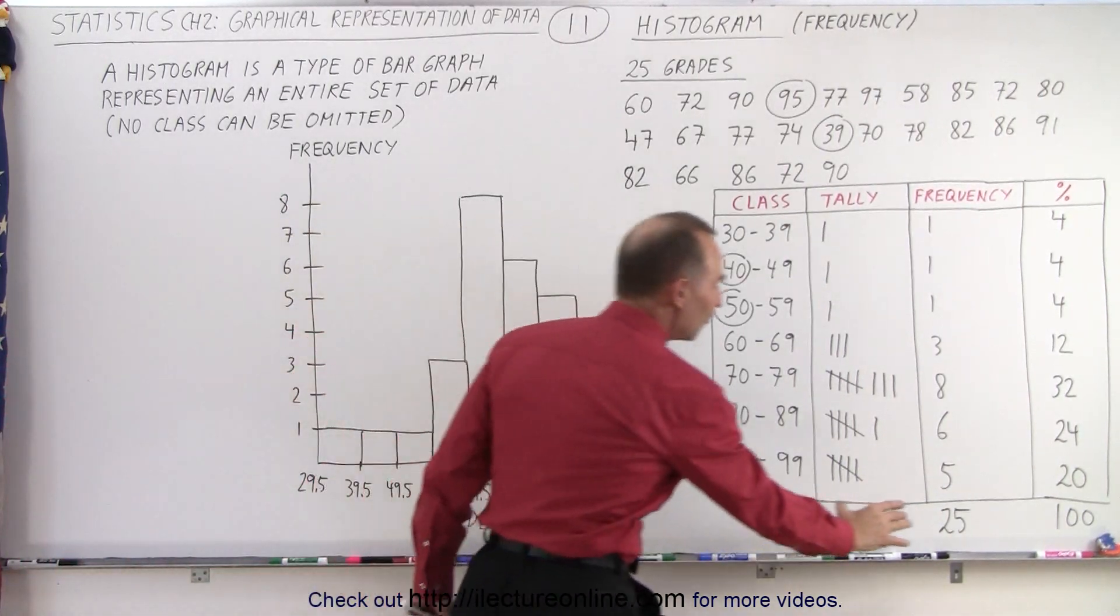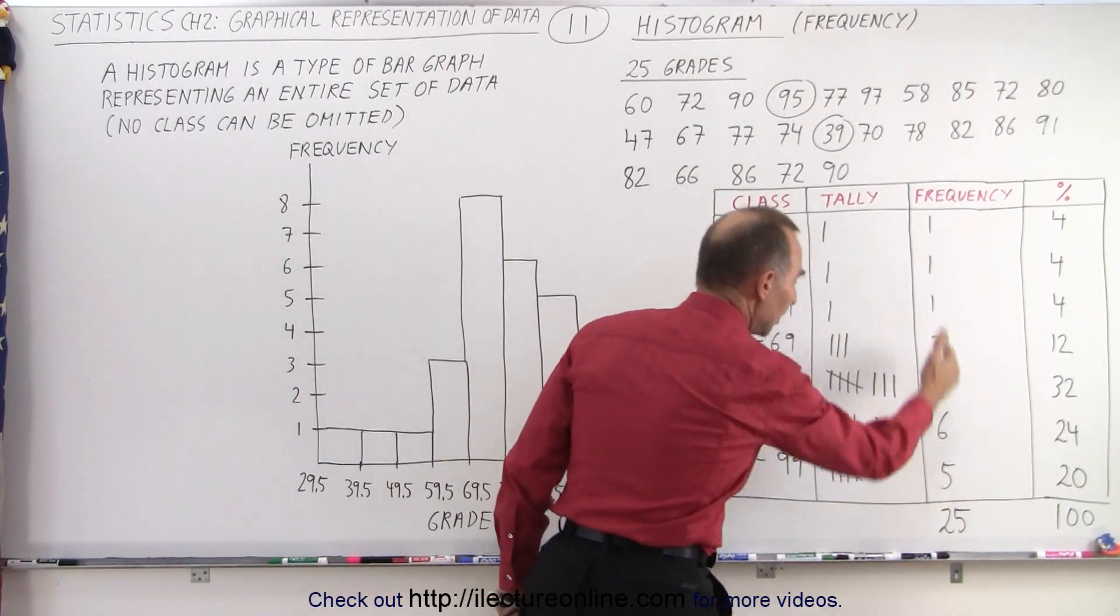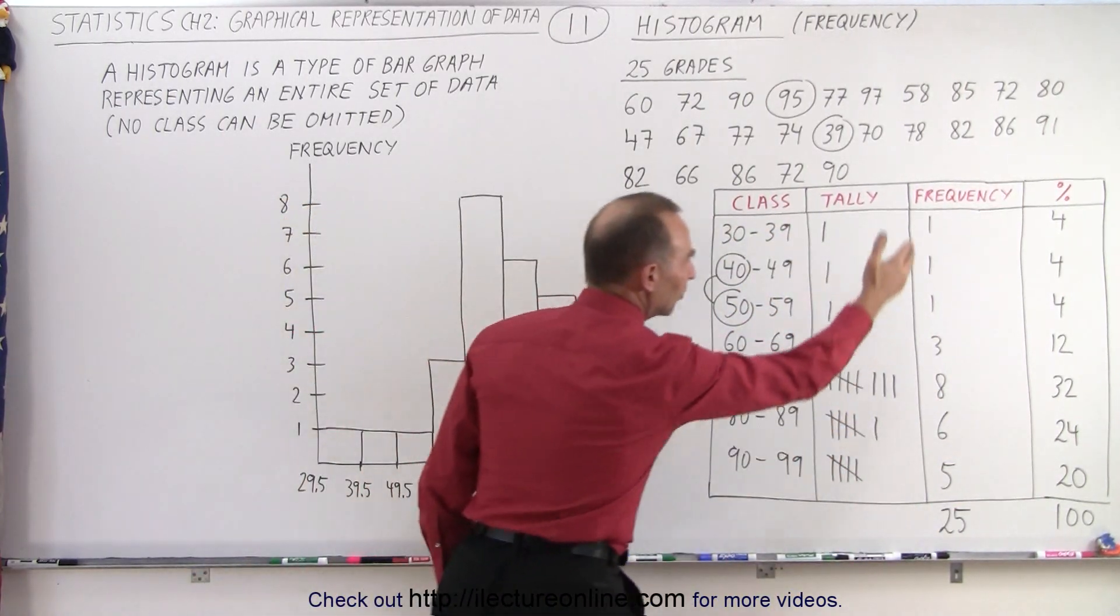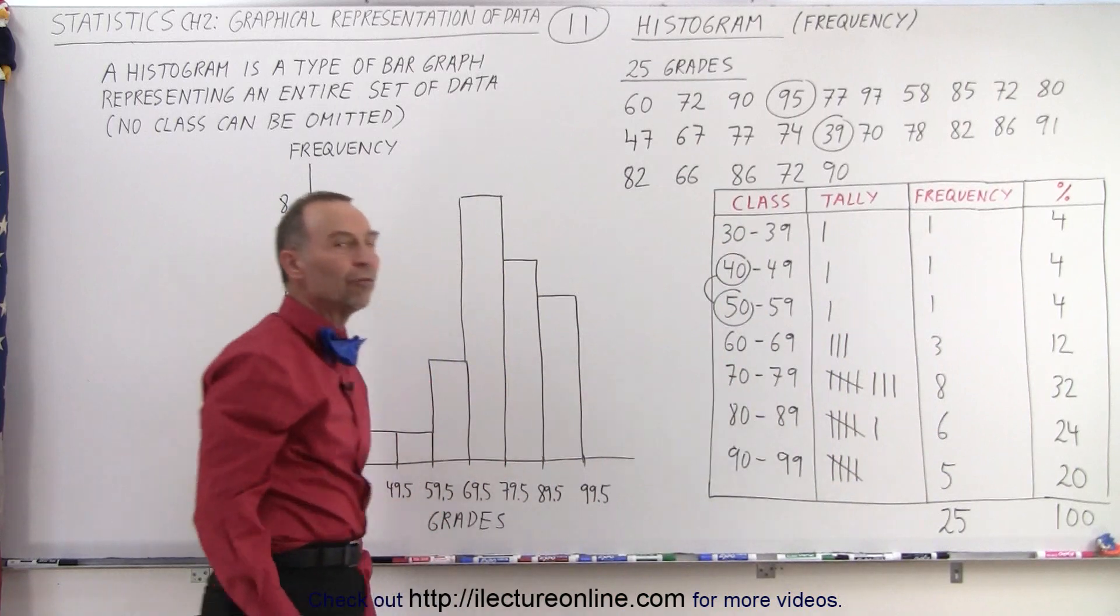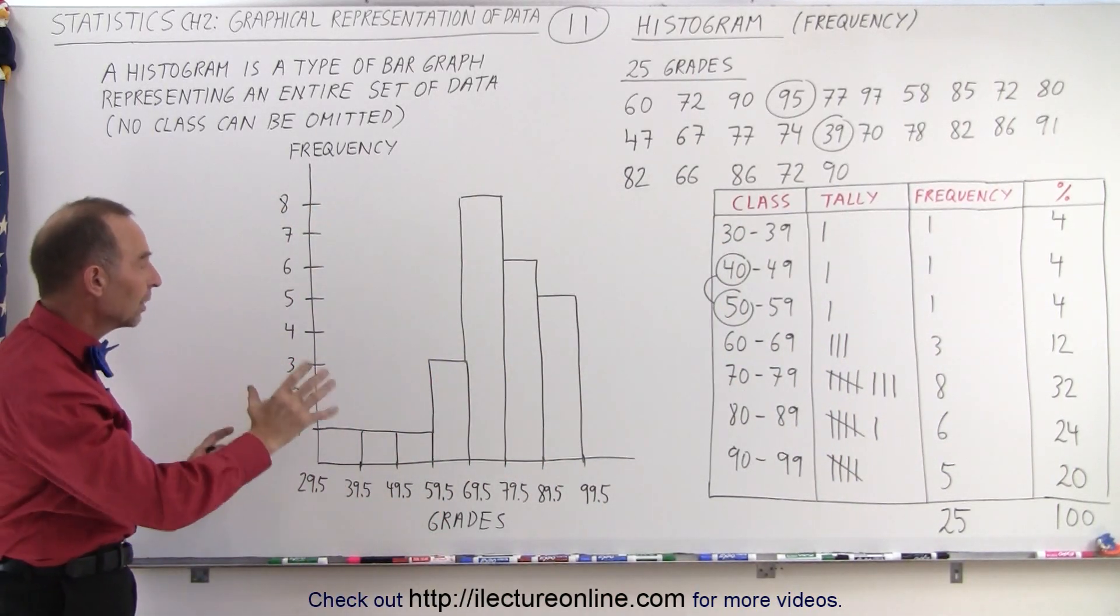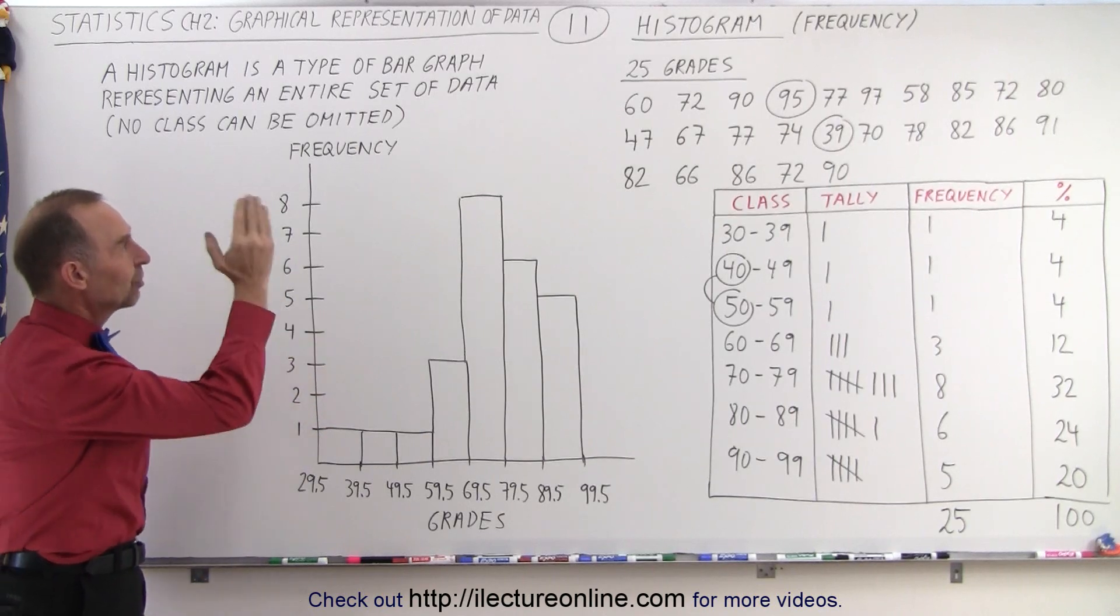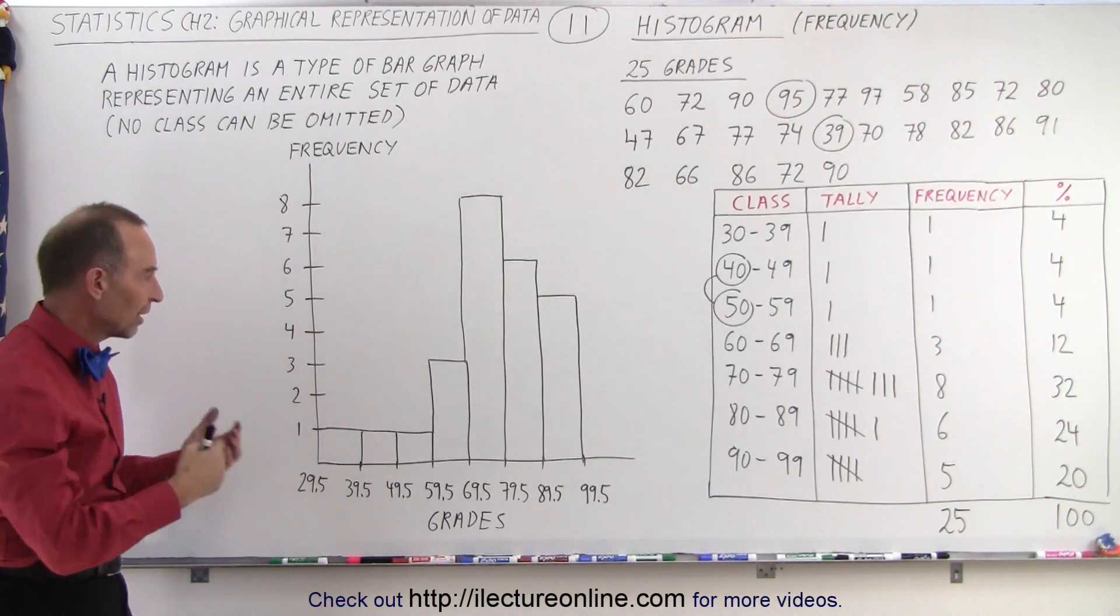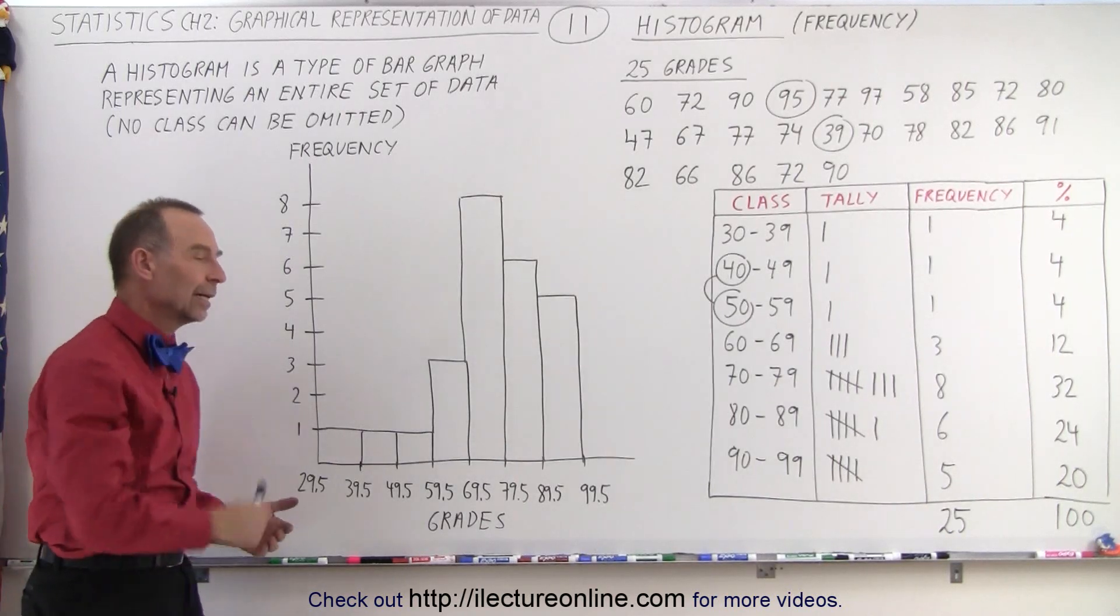There's a total of 25 pieces of data. They're all contained within the histogram and it represents 100% of all the data. So this is how we group them together into a histogram which gives you the frequency of each class, the frequency of occurrence of the data of each class.